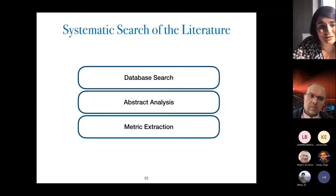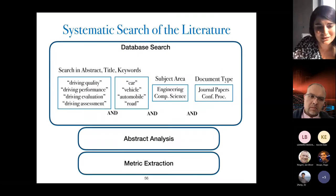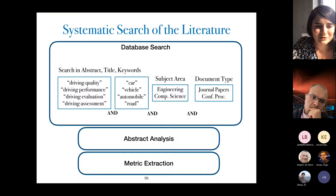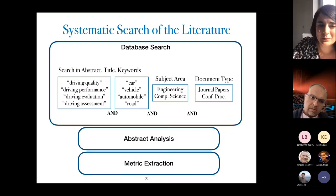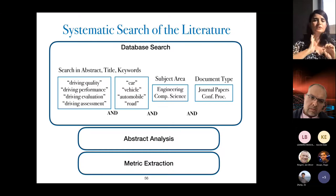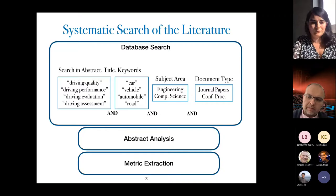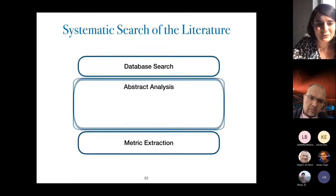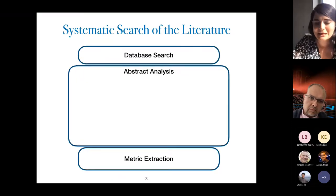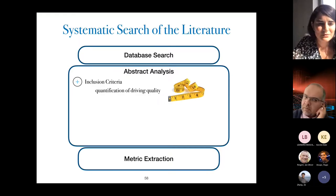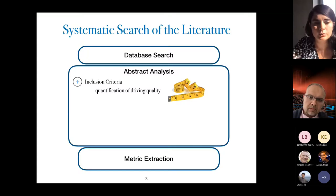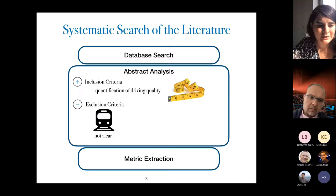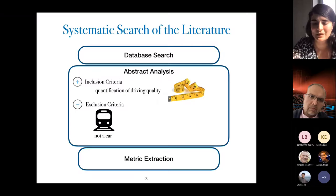For the systematic literature search, our search string combined terms related to the quality of driving as well as terms related to core aspects of driving. We ensured publications were in engineering and computer science and were journal or conference papers, leaving us with 2,270 papers. We then applied abstract-level inclusion and exclusion criteria: papers had to show driving quality was quantified in some way; we excluded papers about trains or non-car vehicles, papers where metrics were related to the human perception system such as driver heart rate, eye tracking, comfort, arm stiffness, posture, or brain activity.